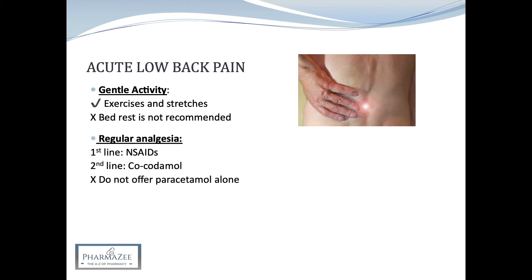Regular analgesia is recommended — offer an NSAID such as ibuprofen first line if there are no contraindications. Remember the 48-hour rule with musculoskeletal injuries: avoid NSAIDs for the first 48 hours, then treatment can be started in case the back pain is due to a strain. An NSAID should be used at the lowest effective dose for the shortest possible time, and gastroprotective treatment should also be offered. If NSAIDs are contraindicated, not tolerated or ineffective, offer co-codamol instead, but give advice regarding the maximum duration of use to avoid opioid dependence and adverse effects such as constipation, which may exacerbate lower back pain. According to NICE, it is not recommended to offer paracetamol alone for managing low back pain.